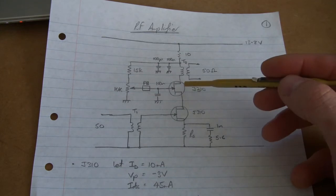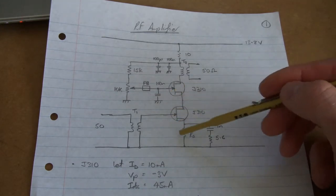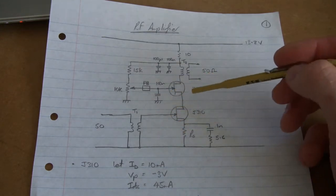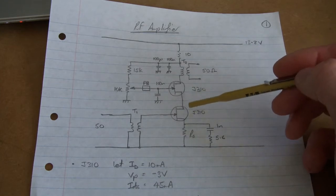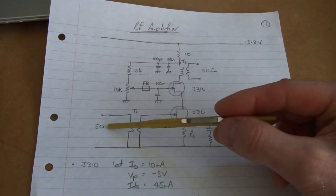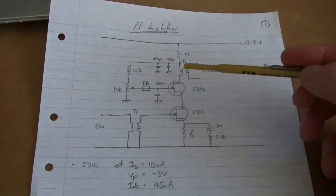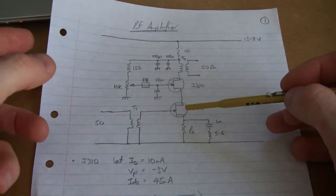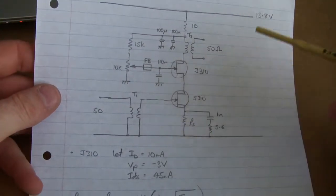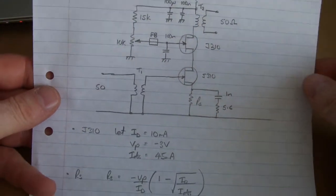It's two J310s in a cascode configuration, giving a pseudo dual gate MOSFET. The signal's coming in through here, so 50 ohms from the antenna. There's an impedance matching transformer, looking to bring that up to around 2,000 to 3,000 ohms.